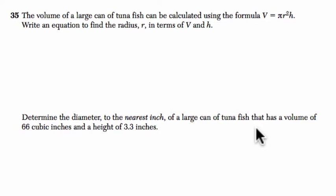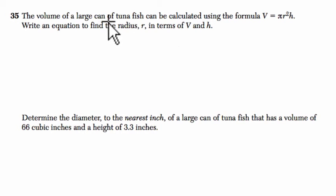Alright, try this problem on your own and then press play when you want to solve it with me. Okay, so the volume of a large can of tuna fish can be calculated using this formula: volume equals π r squared times the height. That's because the tuna is in a cylindrical can, and to find the volume of a cylinder we do the area of a circle, π r squared, times the height.